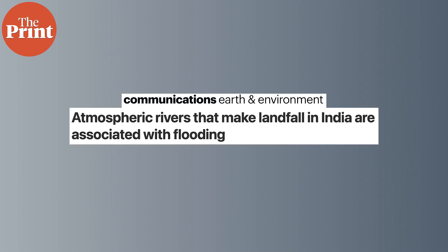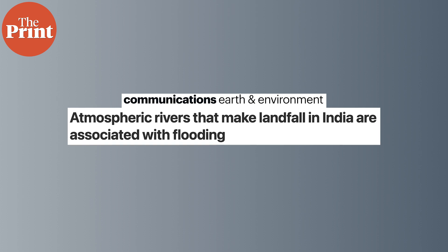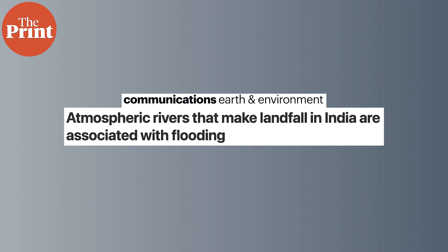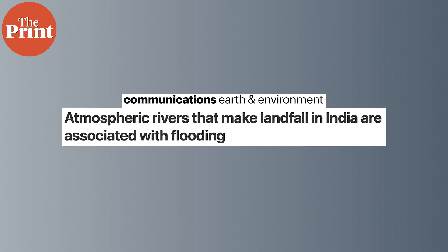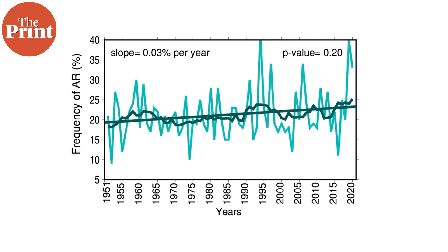When atmospheric rivers interact with land, especially rocky terrain like mountains, they cause the most precipitation. The role played by atmospheric river systems in destruction is not limited to California. A study published last year in Communications Earth and Environment journal looked at the total amount of rain and flooding caused by atmospheric river systems from 1951 to 2020 in India.